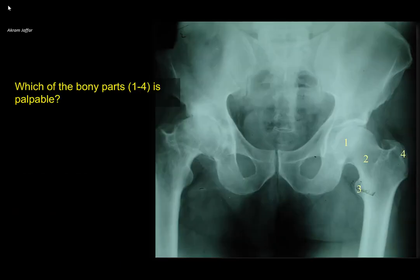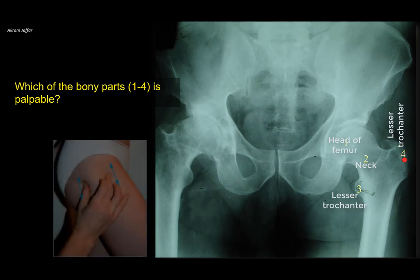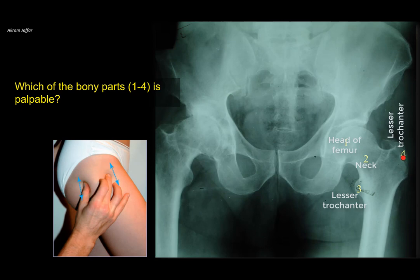Which of the bony parts one to four is palpable? This is a posteroanterior view of the pelvis showing the hip joints and proximal femur. The head of the femur fits into the acetabulum and is not palpable. The neck of the femur is surrounded by many muscles, very deep and not palpable. The lesser trochanter on the medial side is also very deep — you can see the soft tissue shadow between it and the skin. The greater trochanter of the femur is more superficial and can be felt — it is a palpable surface anatomical landmark on the lateral side of the hip and the bone that annoys us when sleeping on our side on a hard surface.